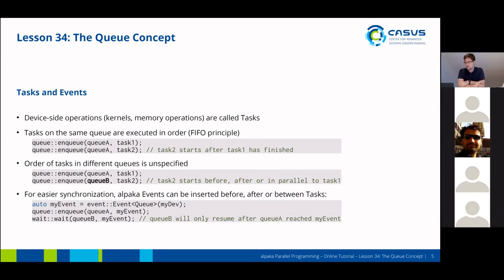To synchronize across multiple queues, we can use events. Events can be inserted before, after, or between tasks. You first construct an event on a specific device, then enqueue that event on the device's queue. You can then use the wait command to tell a queue to wait on this event, and it will only resume after the first queue has reached that event, meaning all preceding operations of the event have been completed.